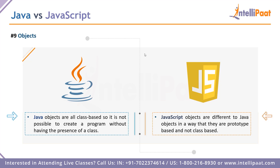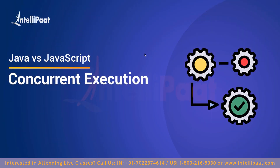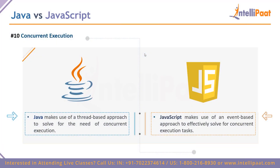Coming to point number nine — usage of objects. Java objects are class-based, meaning without having a class you cannot create any programs or work with Java objects at all. JavaScript objects are very different — they are prototype-based, not class-based. So the strict requirement of having a class to use objects in Java versus not needing one in JavaScript is a very important difference.